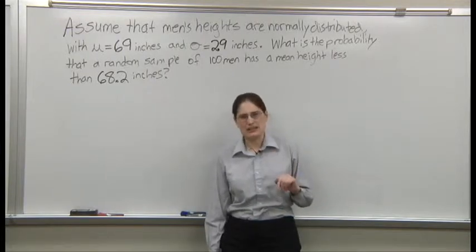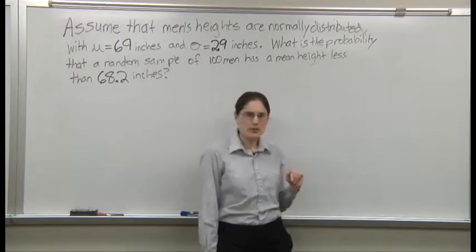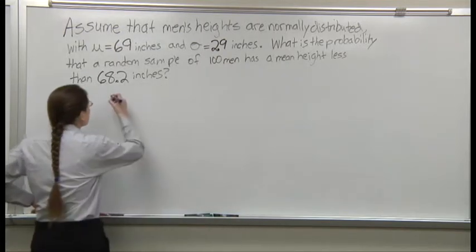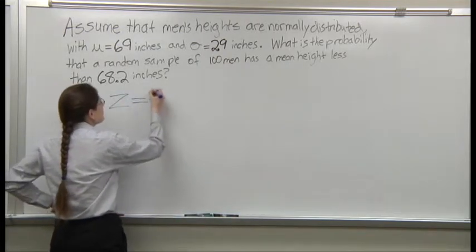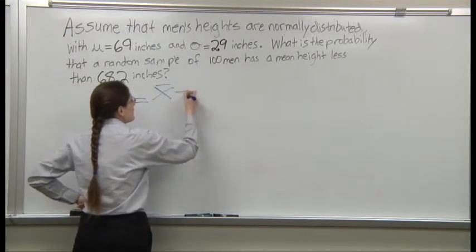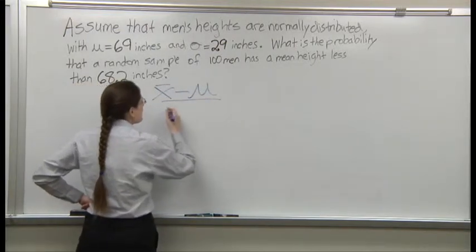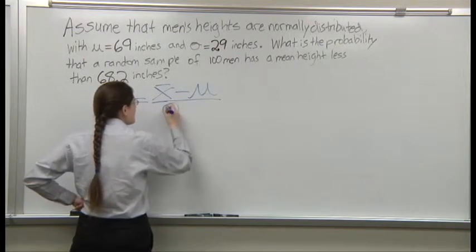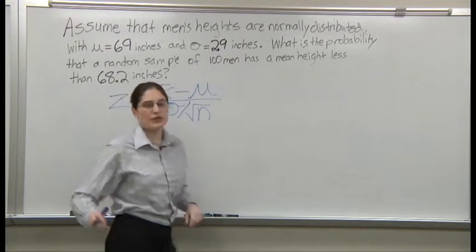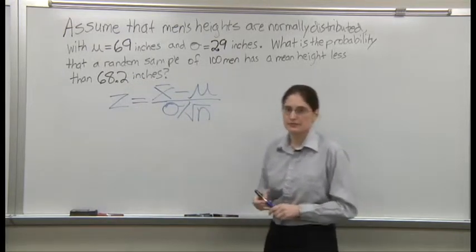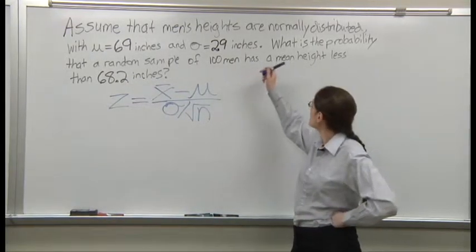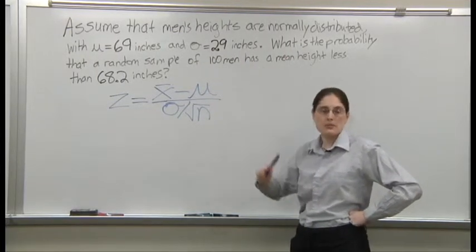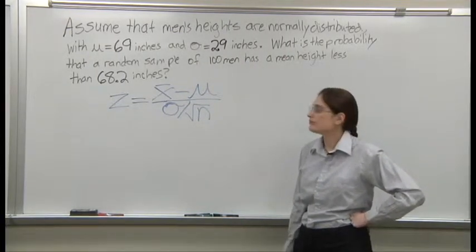How do we do this? Anybody remember? Remember a formula that might have looked a bit like sample mean minus population mean divided by the standard deviation over the square root of n. Because we're looking at the difference between a sample mean and a population mean.